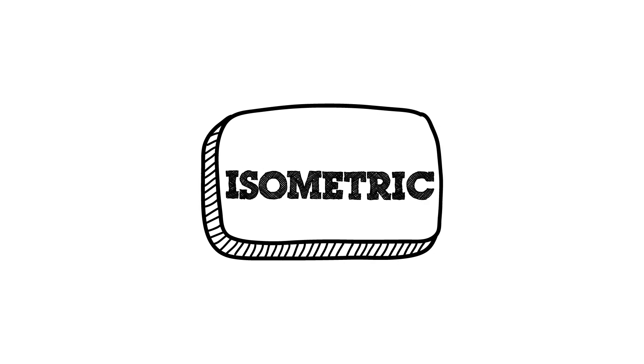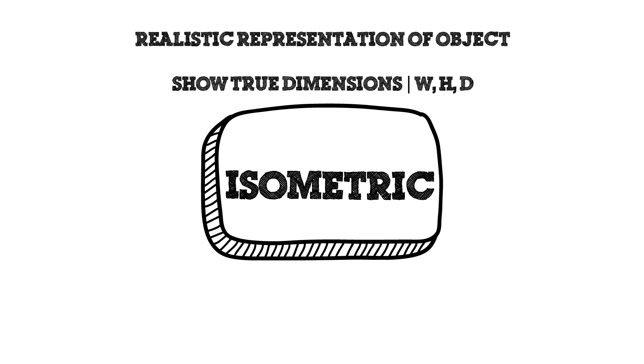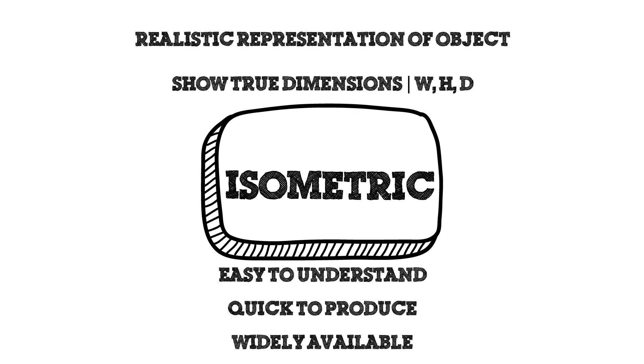To begin with, you have isometric drawings. They do a great job of showing exactly what an object looks like to scale or to actual size, and they show the true dimensions through width, height, and depth of an actual object. They're easy to understand, quick to produce, and widely available. Unlike other pictorial drawings, it stands alone. There's no other subsets of isometric drawings.